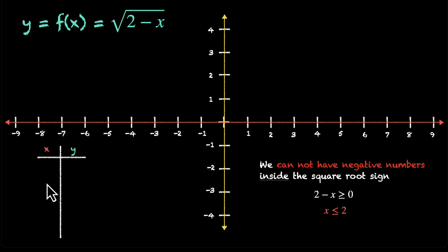Let's start with 2 itself. When you put x as 2, you get 2 minus 2, that's 0. When you put x as 1, you get 2 minus 1, that's 1. Square root of 1 is 1, so y is 1. When you put x as 0, you get 2 minus 0, that's 2. So we have square root of 2.